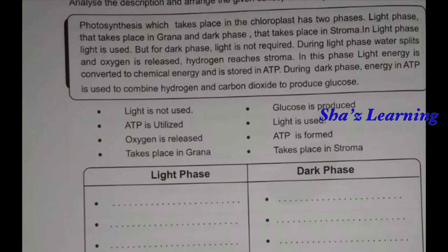Next question: here we have a few hints — light is not used, ATP is utilized, oxygen is released, takes place in grana, glucose is produced, light is used, ATP is formed, takes place in stroma.